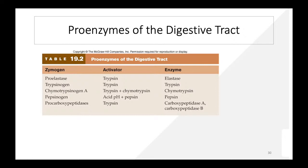Proenzymes of the digestive tract include proelastase, trypsinogen, chymotrypsinogen, pepsinogen, and procarboxypeptidases. Their respective activators include trypsin, trypsin, trypsin, acid pH, and trypsin.